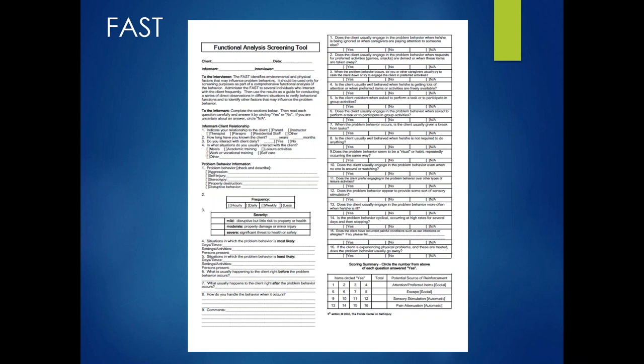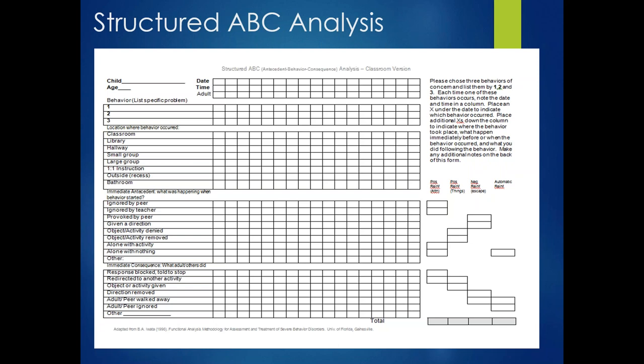Here's another tool — the structured ABC analysis from Brian Iwata and team — which is completed while actively observing. Often we see schools use general ABC forms, which can also be less accurate. If a general ABC form is used rather than a structured pre-printed one, the adult's recording will depend on variables the parent or teacher feels to be important. So we might miss something or not be aware of a variable that is really impacting the behavior. Both of these forms are included in the handouts for today's topic.